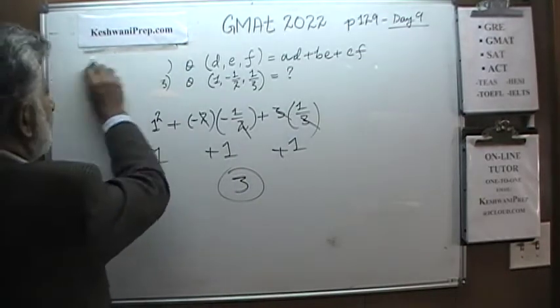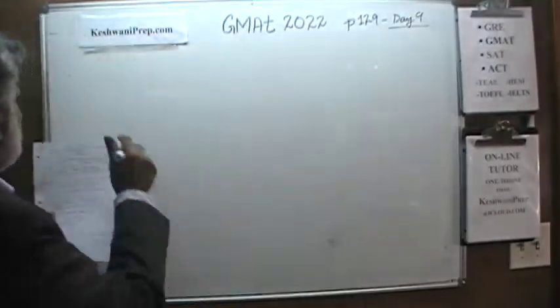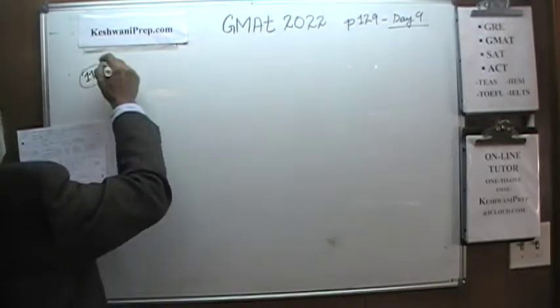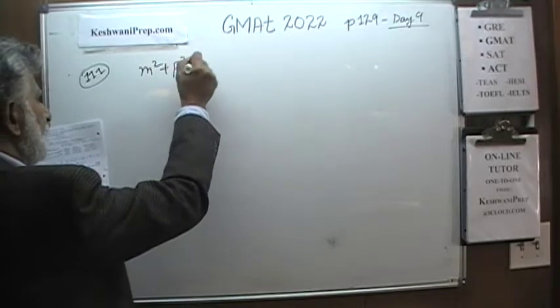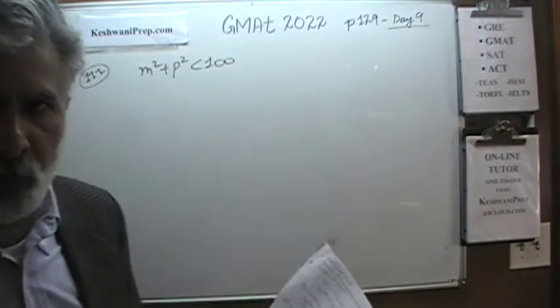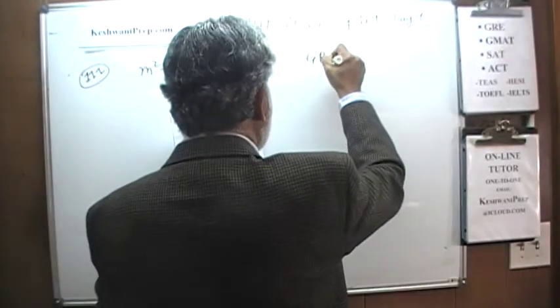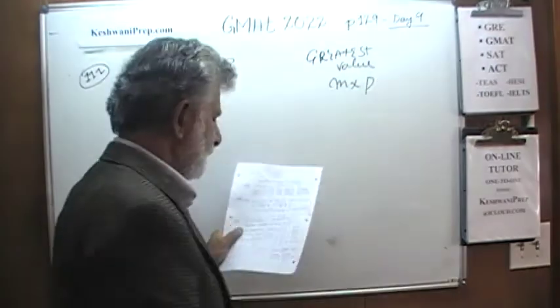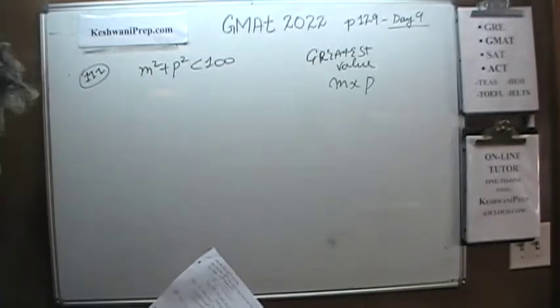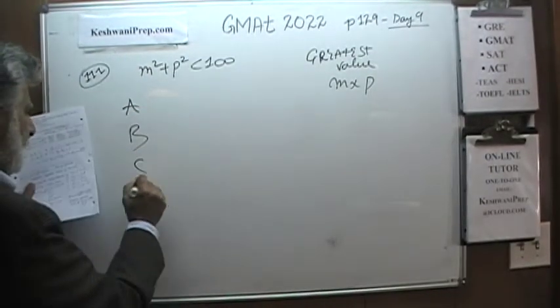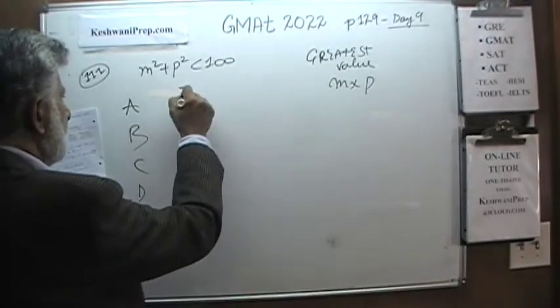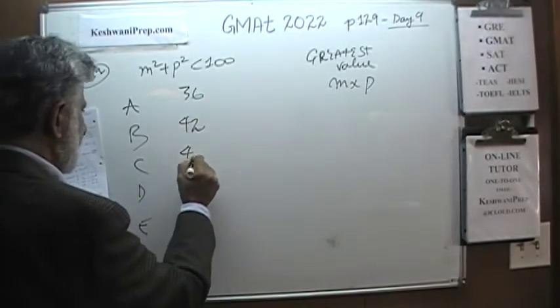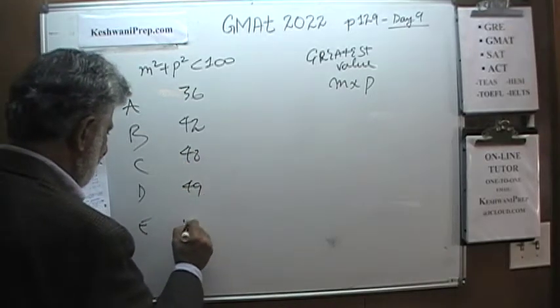Number 111. We are told that M squared plus P squared has to be less than 100. We are further told that M and P have to be positive integers — whole numbers. What we are looking for is the greatest possible value for M times P. Here are the answer choices: A is 36, B is 42, C is 48, D is 49, and E is 51.